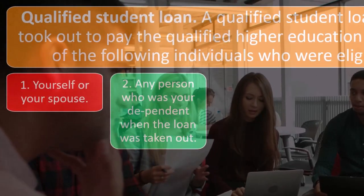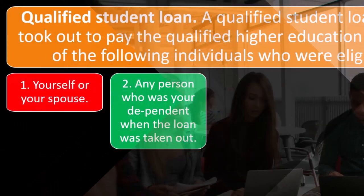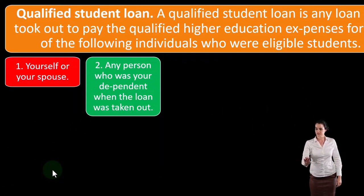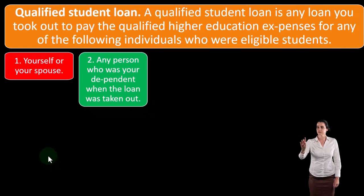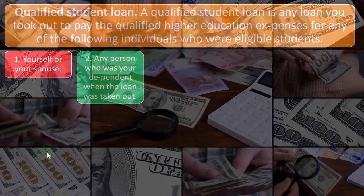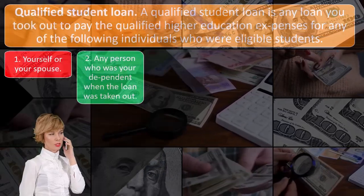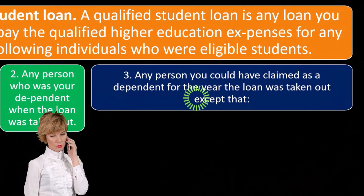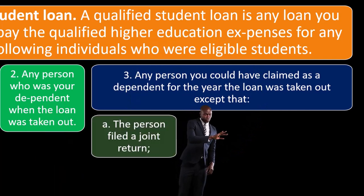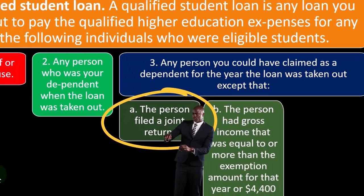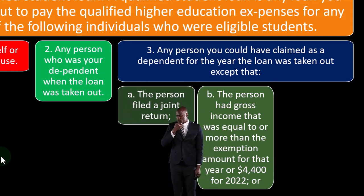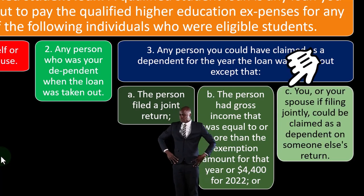You took out a loan for yourself or your spouse — you're one entity for taxes — and now you're paying back the interest on it, so the interest portion might be deductible. Remember, not the whole payment is deductible — just the interest portion, the part charged for the use of the money. Number two: any person who was your dependent when the loan was taken out. Number three: any person you could have claimed as a dependent for the year the loan was taken out, except that (A) the person filed a joint return, (B) the person had gross income equal to or more than the exemption amount — $4,400 for 2022.